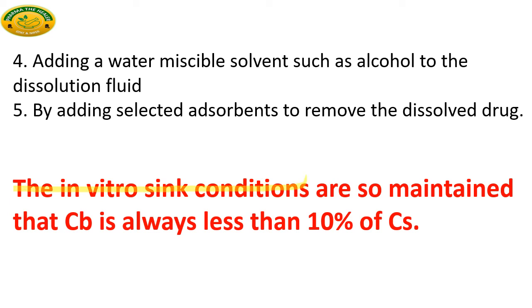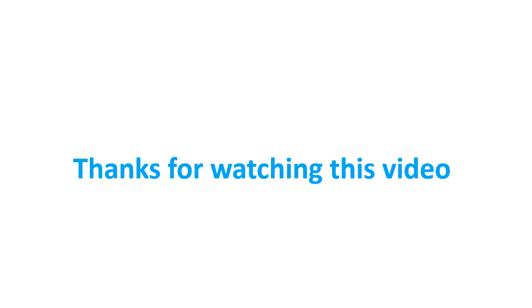This is a very important statement for exam purposes: the in vitro sink condition maintains that the bulk concentration Cb should always be less than 10 percent of the saturation concentration. So in order to obtain the in vitro sink condition, the bulk concentration must always be less than 10% of the saturated concentration.